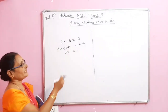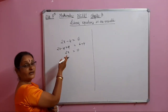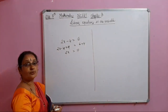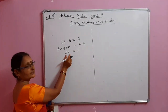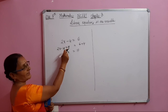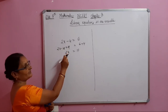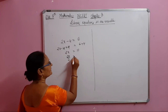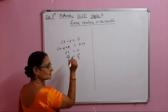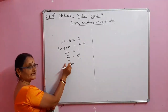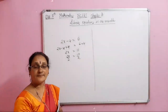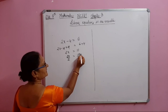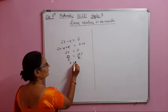Now, 2 is there along with x, so I must eliminate it. Since it is multiplication, I divide both sides by 2: 2x divided by 2 equals 10 divided by 2. The 2s cancel, giving x equal to 5.